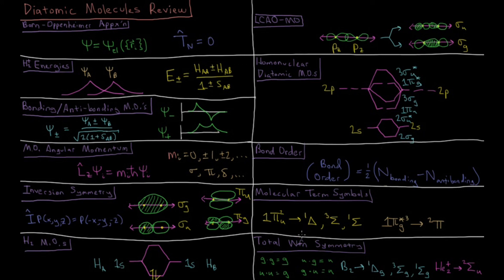And then our total term symbols are classified by capital Greek letters like capital sigma, capital pi, and capital delta. And we have things like singlet delta, triplet sigma, singlet sigma, doublet pi, etc.